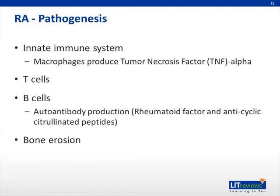Much is known about the pathogenesis of rheumatoid arthritis, and nearly every component of the immune system plays a role. The innate immune system is comprised of dendritic cells that can activate the adaptive immune system consisting of T and B cells. Macrophages are also part of the innate immune system and are important in the progression of inflammation, and produce a very important pro-inflammatory cytokine called tumor necrosis factor, or TNF alpha. T cells coordinate the progression of inflammation and communicate with B cells, which produce the autoantibodies that are important in tissue damage, as well as aiding in diagnosis when identified. Finally, the immune system also activates cells involved in bone formation and degradation, ultimately leading to bone erosion and damage.